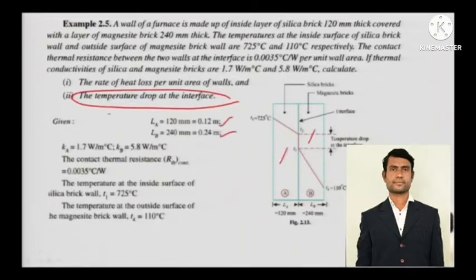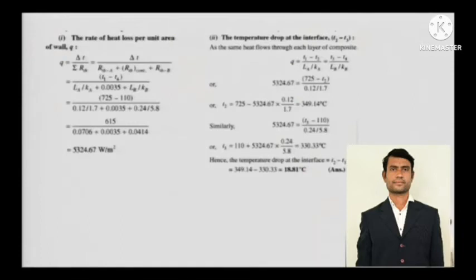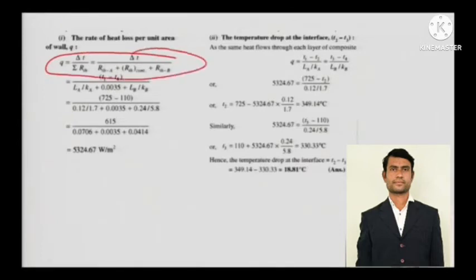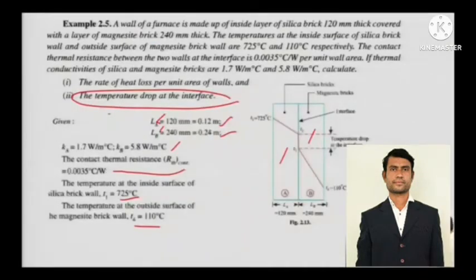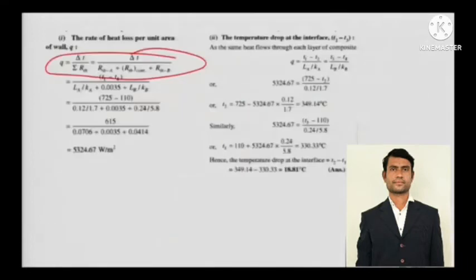This is another composite wall problem. KA, LA, and LB are all given. The contact thermal resistance is given as well — it is the thermal resistance at the interface. The temperatures at the inside and outside surfaces are given. For Q, it is delta T divided by the sum of all R_thermal values: R_thermal of A, plus R_thermal of the contact, plus R_thermal of B. The contact thermal resistance value is given in the numerical, so just solve it and calculate Q.